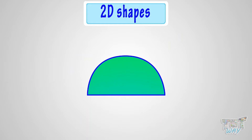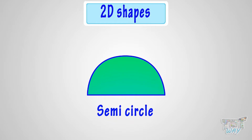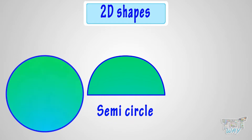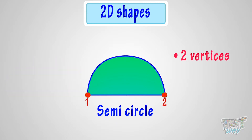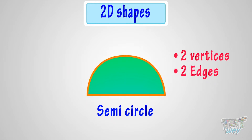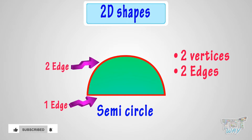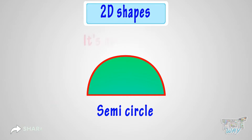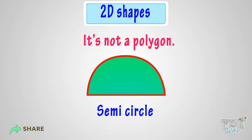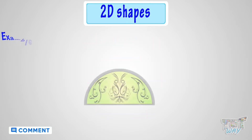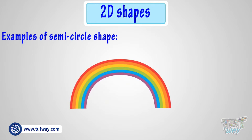This shape is called a semi-circle. It is exactly half of a circle. It has two vertices and two edges — one straight edge and one curved edge. So remember, it's not a polygon. Think of things that are semi-circle in shape — these are various things that are semi-circle in shape.